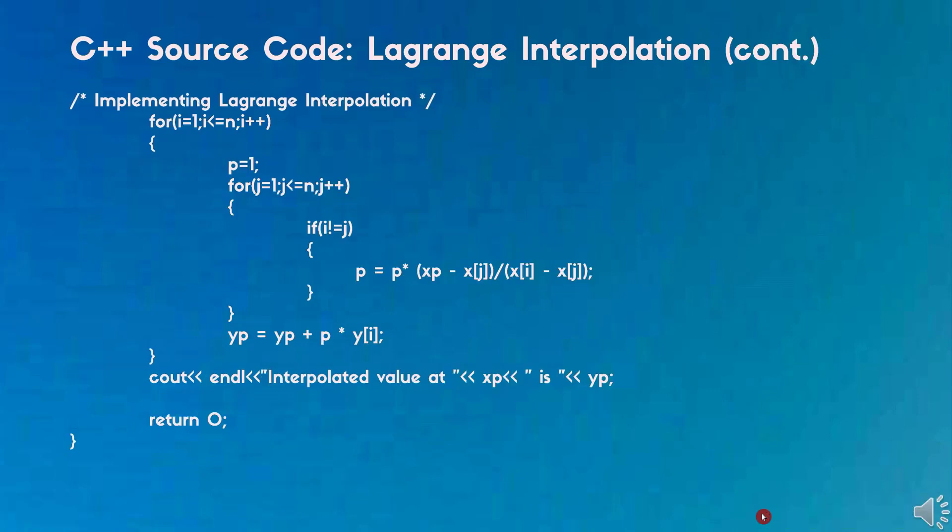After storing the value, we are now going to implement Lagrange's interpolation. For that we need two for loops and one if loop nested to each other. In the for loop the condition we are using is: for i equal to 1, i less than or equal to n, i plus plus. Further preceding, p equal to 1.